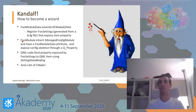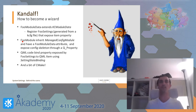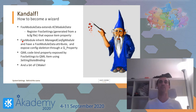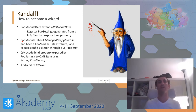So if you want to implement this in your module, you will need a full module data class that extends KCMModuleData. This will register your full settings — a class generated by your KCFG file that exposes item properties. You'll have a full module that extends ManagedConfigModule with a full module data attribute, and you expose the config skeleton — the full settings from KCMModuleData — as a Q property so you can access it from QML. The QML code will bind items using SettingStateBinding.